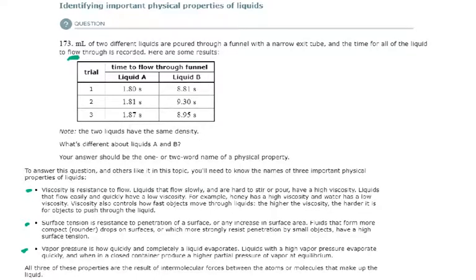That would be viscosity because it's defined as resistance to flow. So the physical property that accounts for the difference between A and B that we see in this table is viscosity.